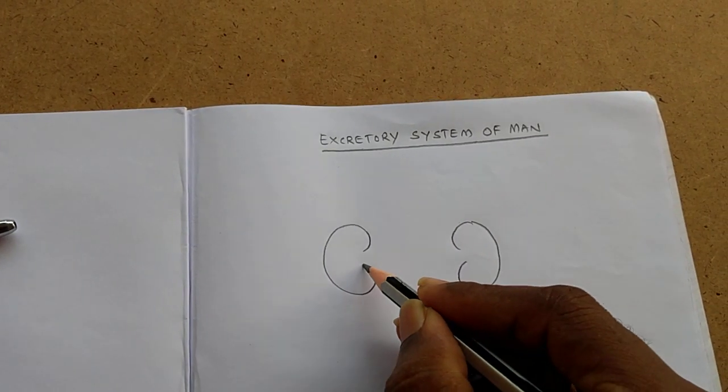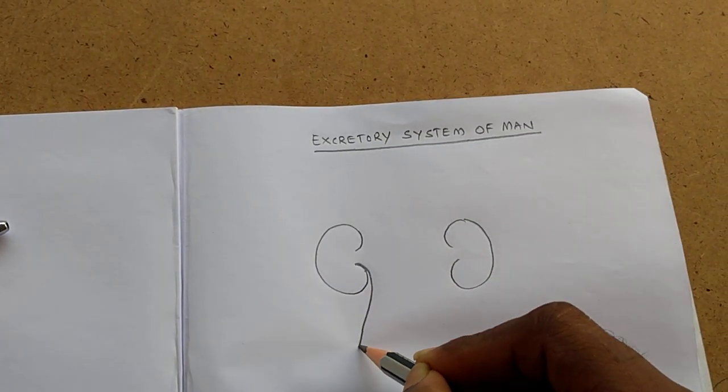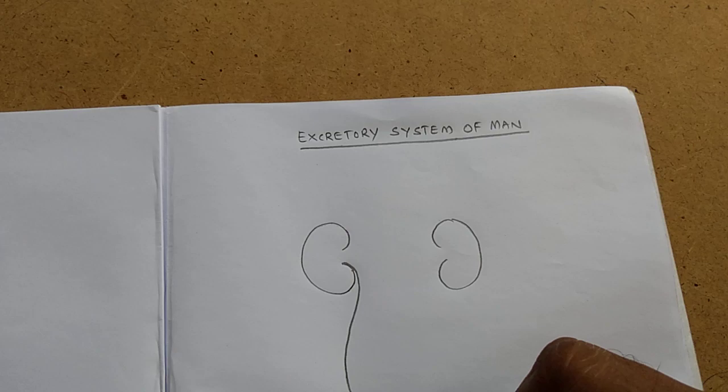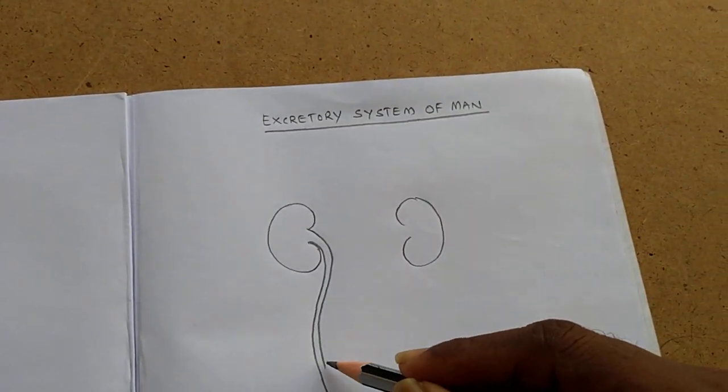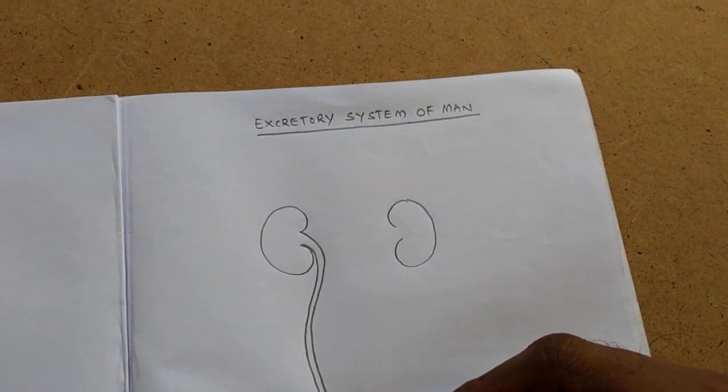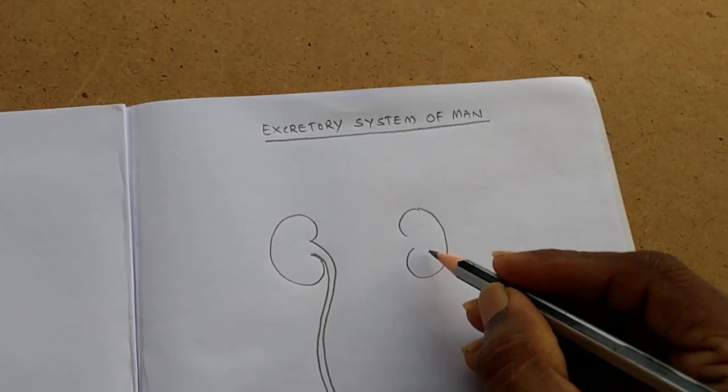From these kidneys, we have to draw ureters, long uncoiled tubes.